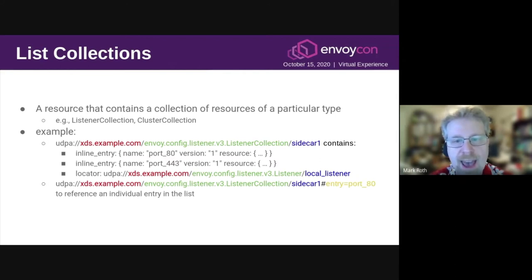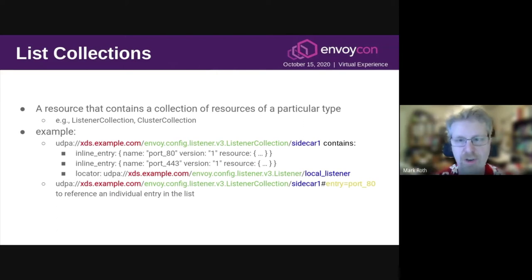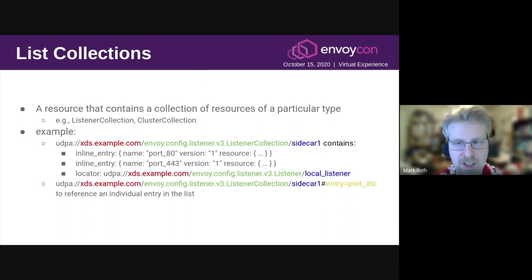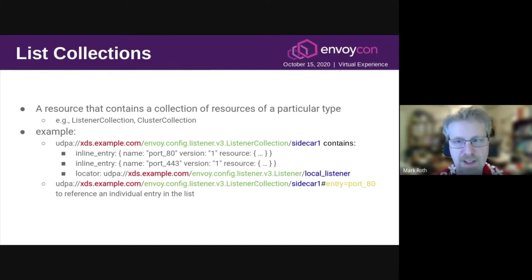In this example, we have a listener collection resource with name xds.example.com/listener-collection/sidecar1 — an arbitrary name for the example. In this case, the collection contains three resources: one inline listener for port 80, another inline listener for port 443, and then a reference to an external listener resource which the client would have to go and fetch separately. Note that for the inline resources, there are names attached to them. These names can be used in an entry directive on the client to refer to one of the inline resources in the collection.